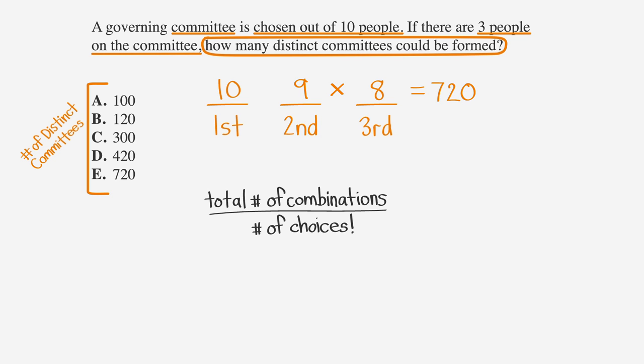So to finish up our question, we need to divide the total number of combinations of committee members, which is 720, by the number of choices factorial, which is 3 factorial. This is simplified to 720 divided by 3 times 2 times 1, or 720 divided by 6.